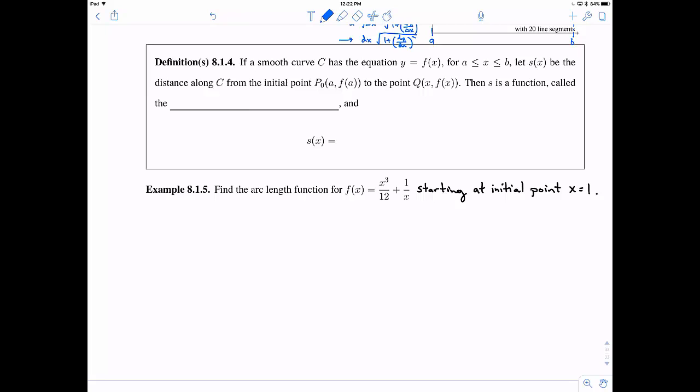This first definition applies to smooth curves. Suppose we have c being a smooth curve given by an equation y equals f of x where x ranges between a and b. Now, s of x is going to be this distance along the curve c from the initial point p-naught to a point q which ends at the value of x. Then s is a function called the arc length function.